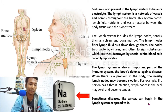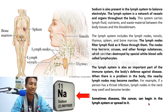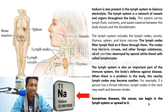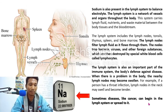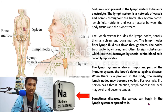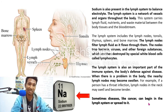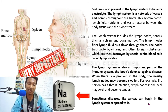When there is a problem in the body, the nearby lymph nodes may become swollen. For example, as we can see in the picture, if a person has a throat infection, lymph nodes in the neck may swell and become tender. Sometimes diseases, like cancer, can begin in the lymph system or spread to it. This is why sodium is really important in our body.